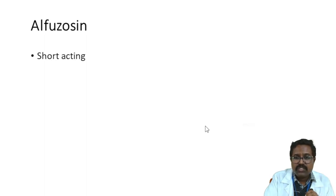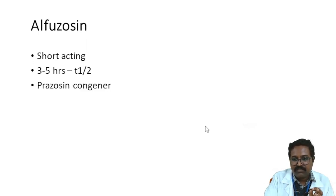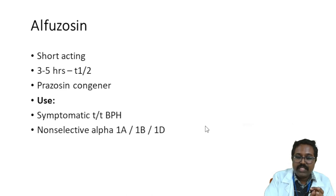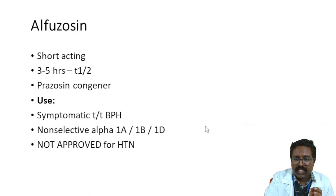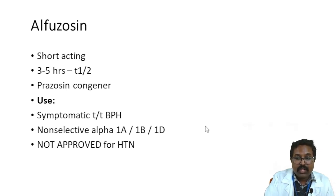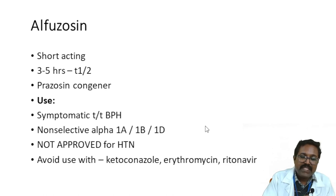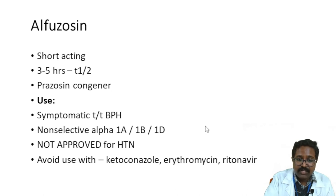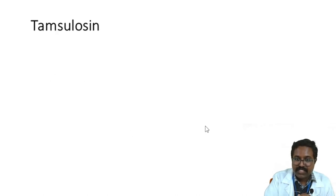Alfuzosin is a short-acting prazosin congener with a half-life of three to five hours. It has non-selective alpha-1a, 1b, and 1d action and is used for BPH but is not approved for hypertension. It should be avoided with ketoconazole, erythromycin, and ritonavir due to drug interactions.